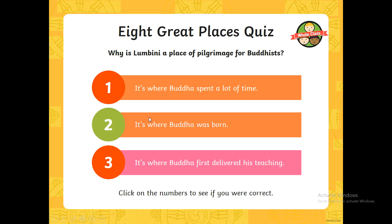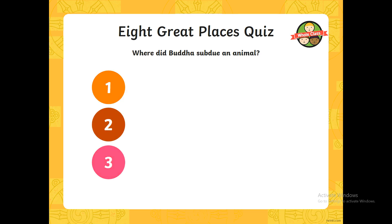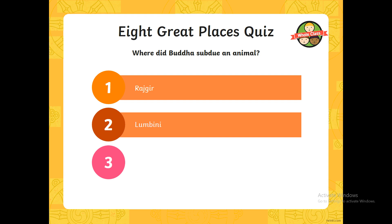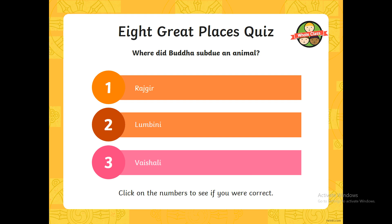Give yourself a mark — there are only five questions, so make sure you give yourself a mark out of five at the end. So where did Buddha subdue an animal? We spoke about this being a bit of a miracle. Was it in Rajgir, was it in Lumbini, or was it in Vaishali? If you put Lumbini, you're incorrect. Vaishali is incorrect. It was in fact Rajgir, where he subdued the elephant through friendliness to calm down the elephant.